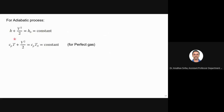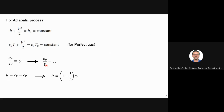We can write h as CpT, so CpT plus V²/2 equals CpT₀ for stagnation enthalpy, where T₀ is the stagnation temperature. This is true for a perfect gas where Cp/Cv is gamma. Since Cp/Cv is gamma, I can write Cp/gamma as Cv, and R is Cp minus Cv. So R equals (1 minus 1/gamma) times Cp. I can write Cp in terms of gamma and R: Cp = gamma R/(gamma minus 1), and therefore CpT = gamma R T/(gamma minus 1).